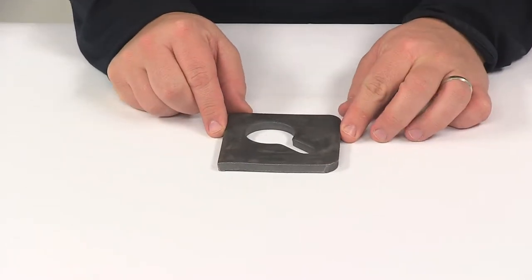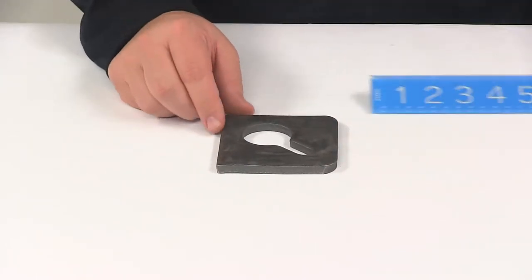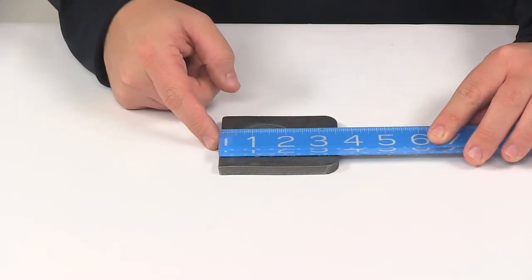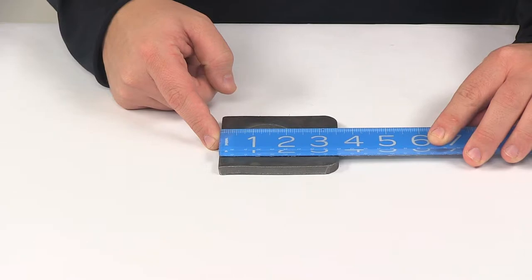A few measurements to go over real quick. Measuring in this direction edge to edge, we can see that that's going to give us a measurement of about 3 1/2 inches, about 3 9/16ths.